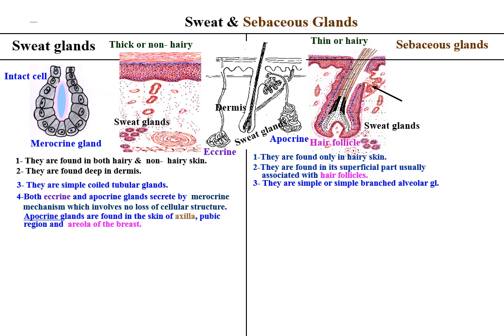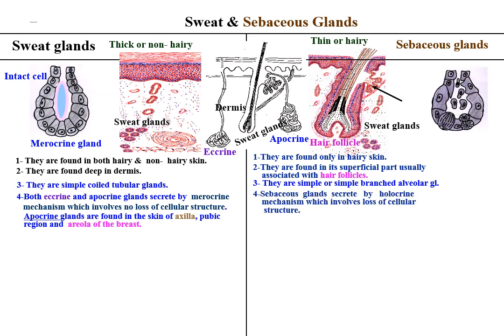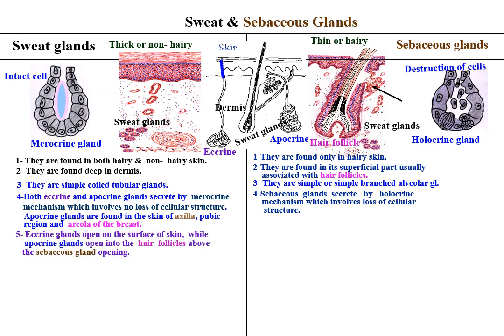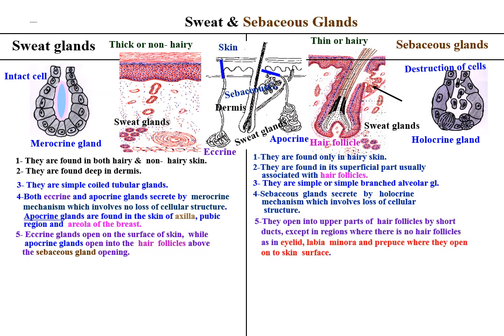Apocrine sweat glands are found in the skin of the axilla, pubic region, and areola of the breast. While sebaceous glands secrete by holocrine mechanism, which involves loss of cellular structure. Eccrine sweat glands open onto the surface of the skin, while apocrine sweat glands open into the hair follicles above the sebaceous gland opening. Sebaceous glands open into the upper parts of the hair follicles by short ducts, except in regions where there are no hair follicles, such as eyelids, labia minora, and prepuce, where they open onto the surface of the skin.